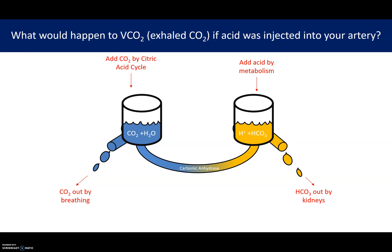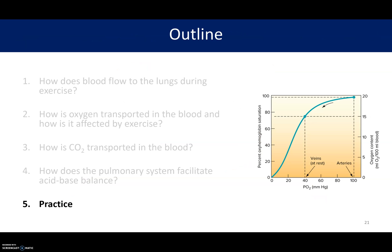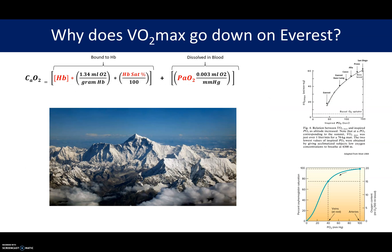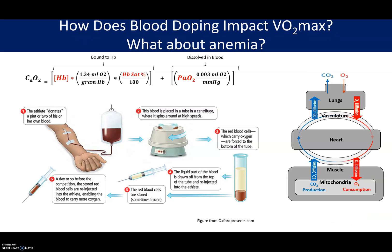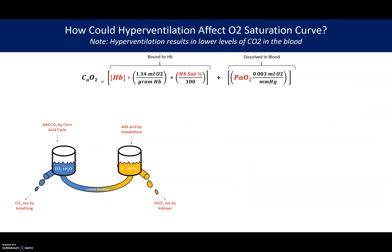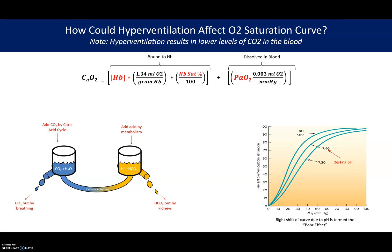That's all for today. In the PowerPoints I encourage you to look through and do these practice problems: see if you can explain why VO2 max goes down on Everest, what blood doping would do to your CaO2 and performance, and how hyperventilation would affect your oxygen saturation. Check Learning Suite for any quizzes associated with this lesson.